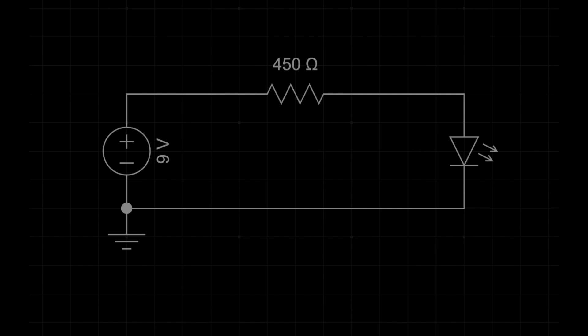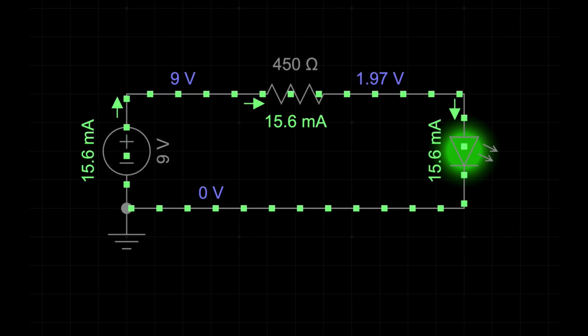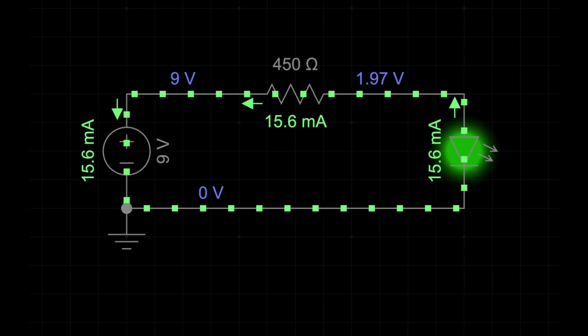Visual aids and circuit diagrams can help clarify these concepts. Imagine a simple circuit with a battery, a resistor, and an LED. According to conventional current, electricity flows from the positive terminal of the battery, through the resistor, through the LED, and to the negative terminal. However, the electrons are actually moving in the opposite direction, from the negative terminal, through the LED, through the resistor, and to the positive terminal.